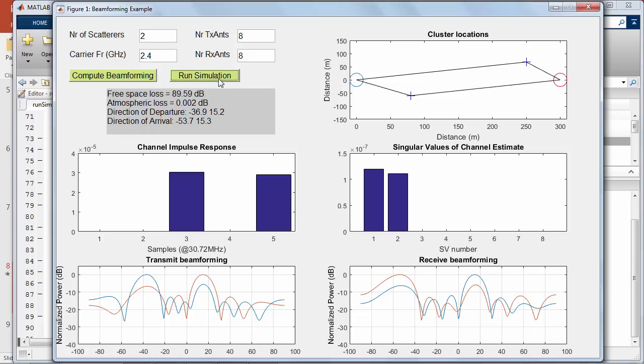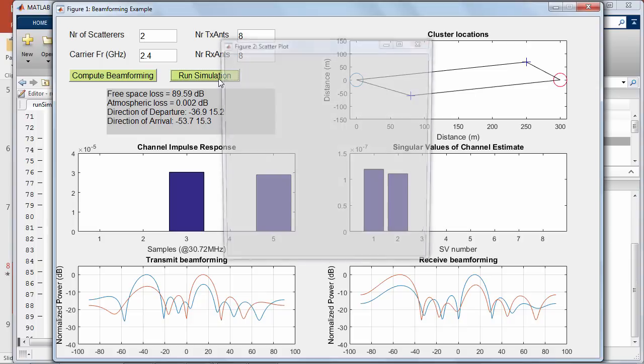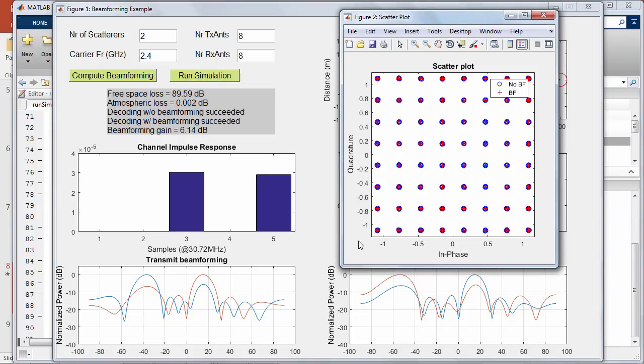Let's run the LTE simulation with and without beamforming. The scatter diagram in red shows the received constellation of the beamforming case is less noisy than without beamforming. The beamforming gain measured on the EVM is about 6 dB.